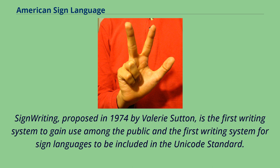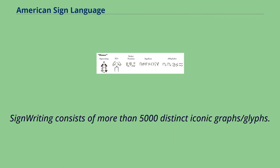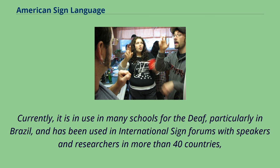Sign writing, proposed in 1974 by Valerie Sutton, is the first writing system to gain use among the public and the first writing system for sign languages to be included in the Unicode standard. Sign writing consists of more than 5,000 distinct iconic graphs/glyphs. Currently, it is in use in many schools for the deaf, particularly in Brazil, and has been used in international sign forms with speakers and researchers in more than 40 countries, including Brazil, Ethiopia, France, Germany, Italy, Portugal, Saudi Arabia, Slovenia, Tunisia, and the United States.